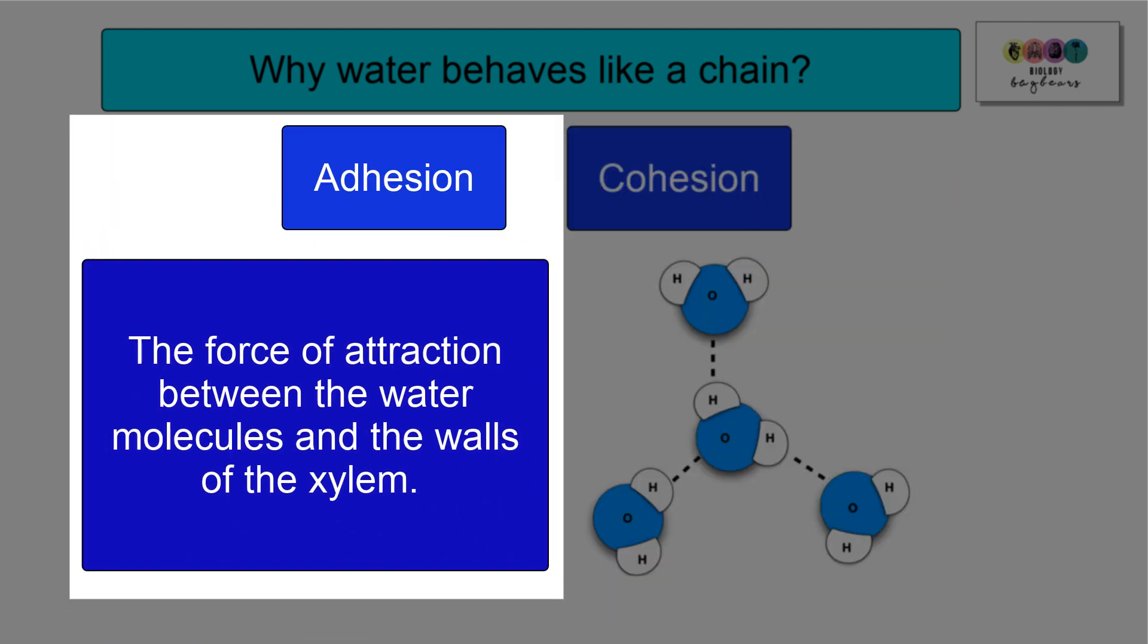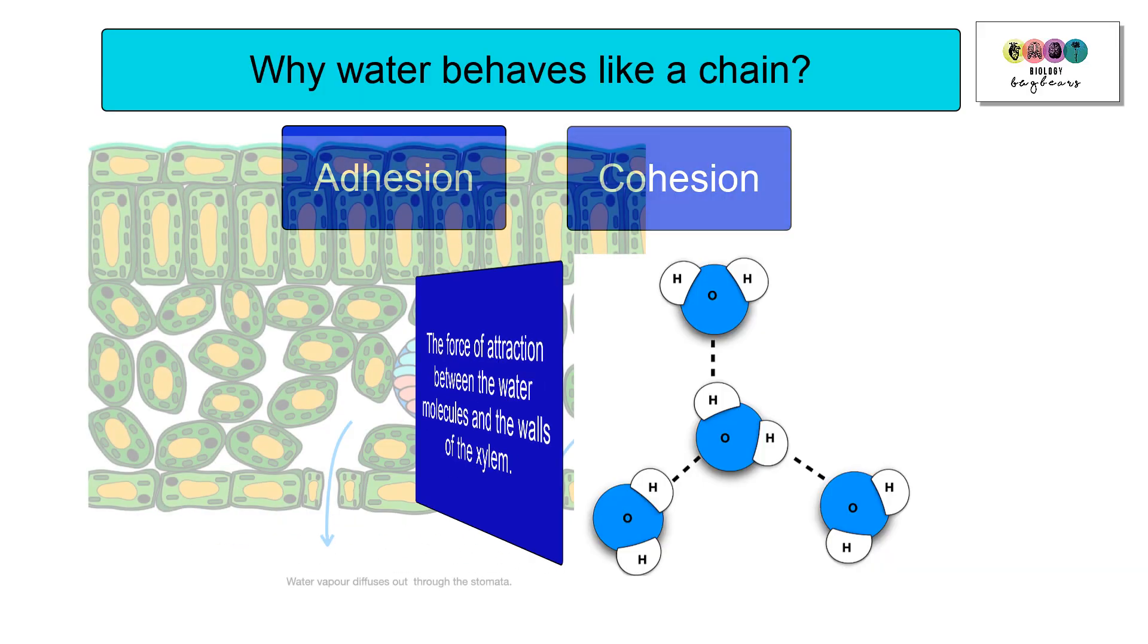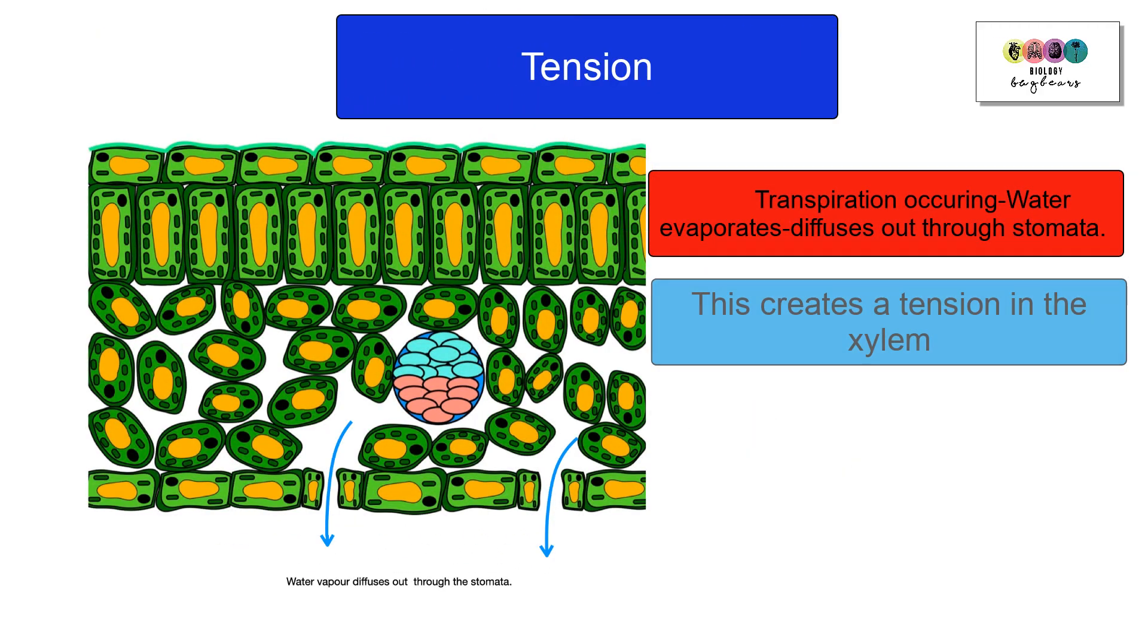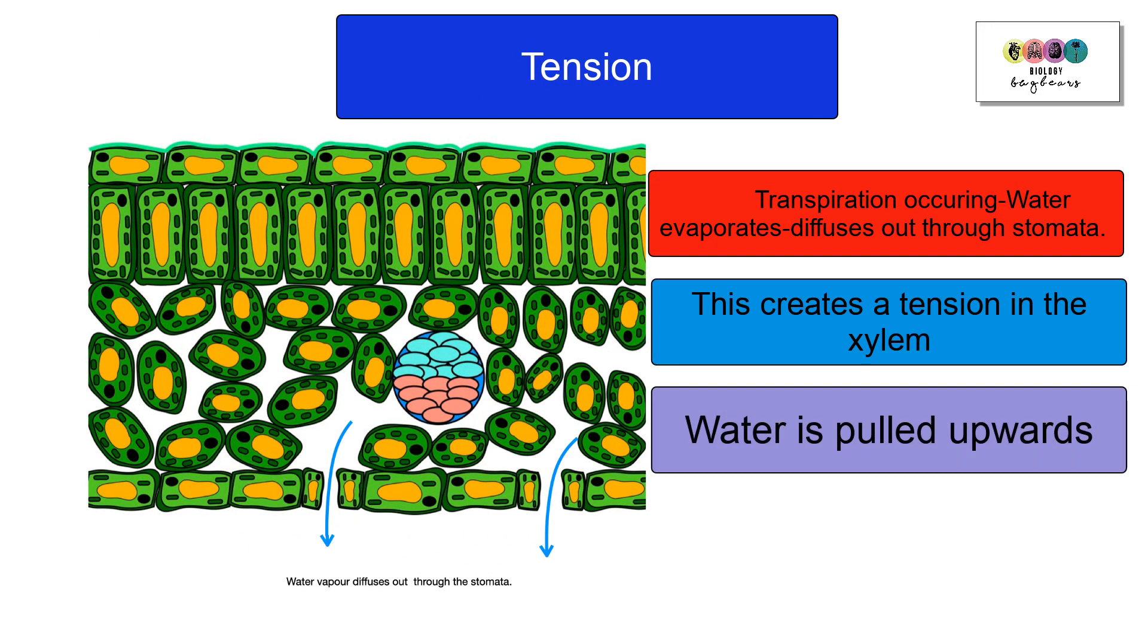Lastly, we have tension. Transpiration is taking place in the leaf and the water is evaporating and diffusing out through the stomata. Because water is behaving like a column or a chain due to cohesion and adhesion, transpiration results in this pulling force, this tension, and water is pulled upwards through the plant.